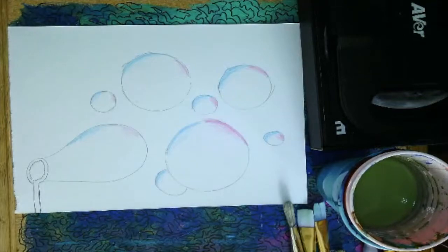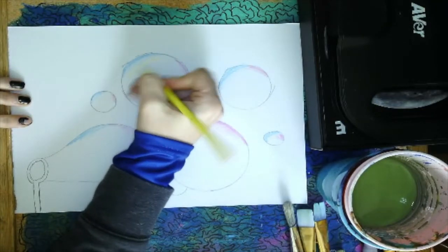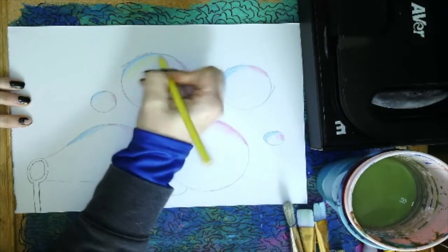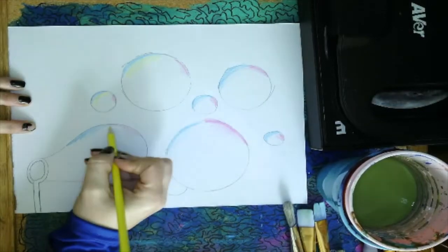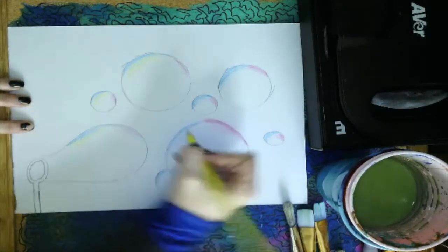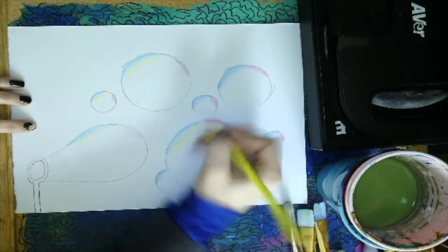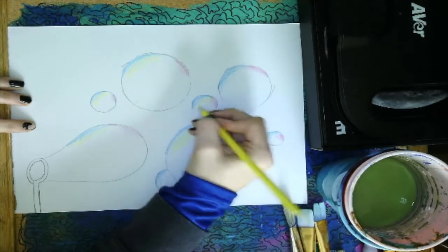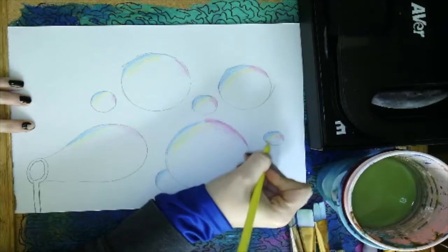And bubbles are actually pretty tricky so I'm just going to try the best that I can to make it look like what I would think it would look like. I'm going to add a little bit of yellow next to my blues, because I want these to end up being pretty colorful.